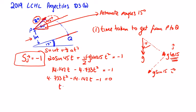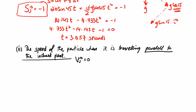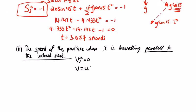Part two of this question, we're asked for the speed of the particle when it's traveling parallel to the inclined plane. So that's when the velocity of J equals zero. So we fill that into V equals U plus AT.